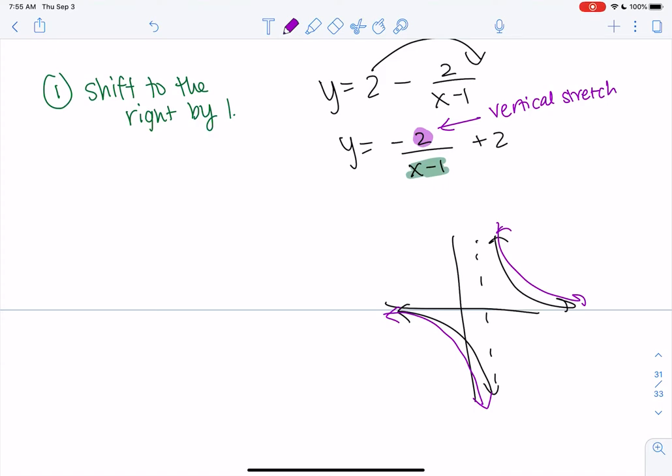So the negative sign is a reflection. I didn't write it down. Vertical stretch by 2.